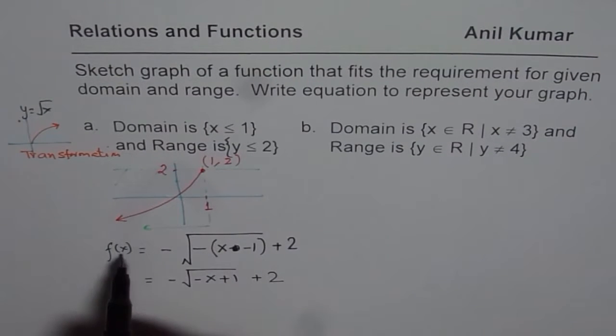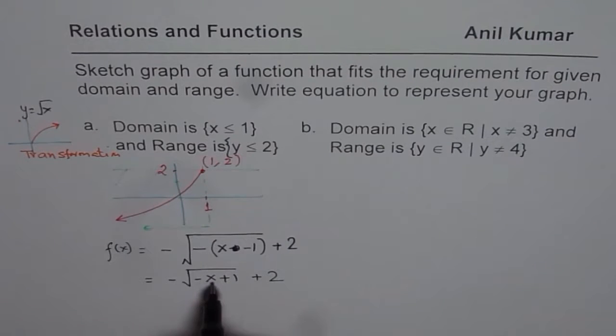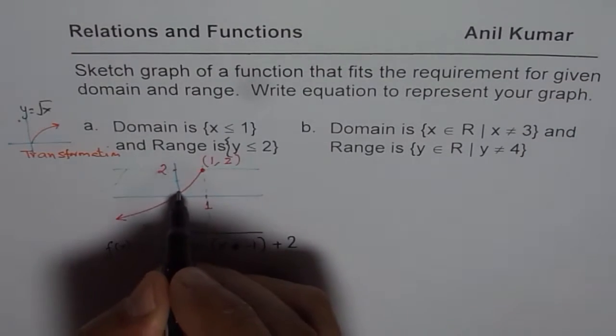If you really want to be more specific, you can also find the value of the y-intercept. So if I write x equals to 0, then I get square root of 1, which is 1, and taking away 1 from 2, we get 1. So this point for us could be 1.